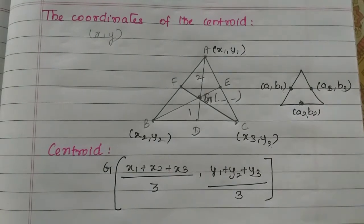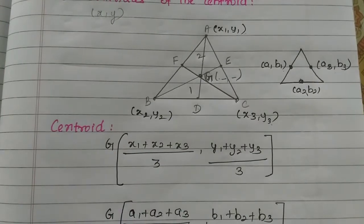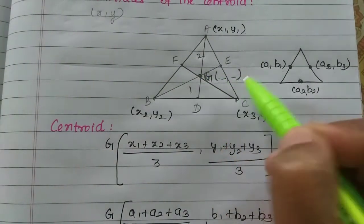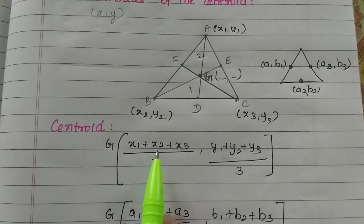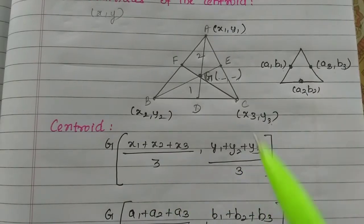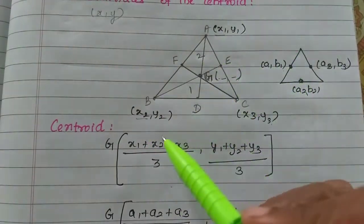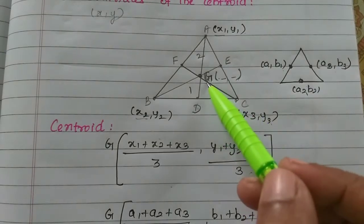What is the formula? The centroid formula gives us the G coordinates as x, y. So if we add the three x-coordinates and divide by 3, and add the three y-coordinates and divide by 3, we get the centroid G.